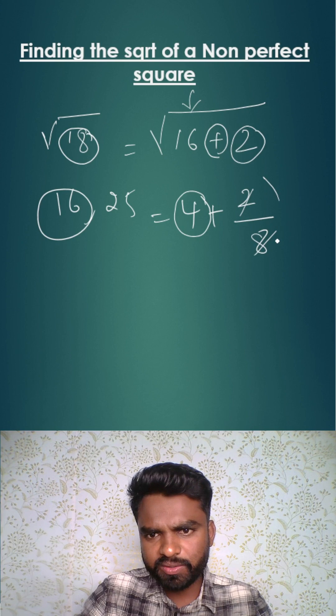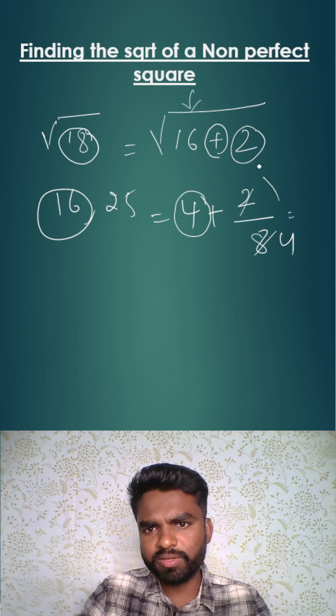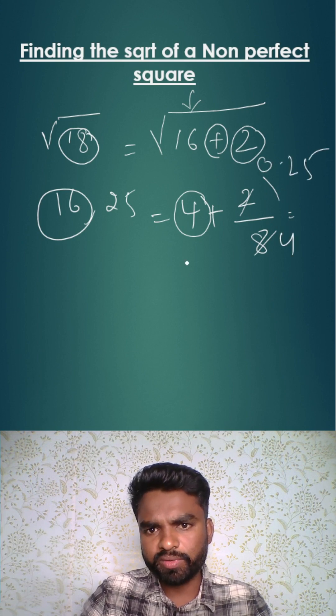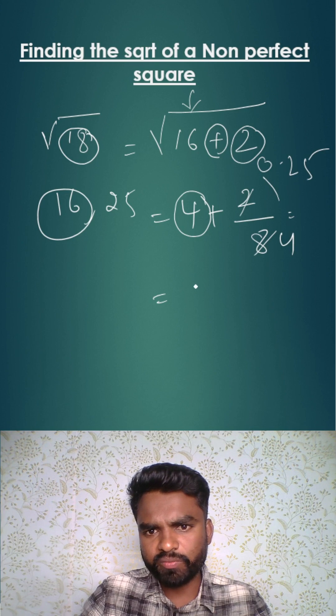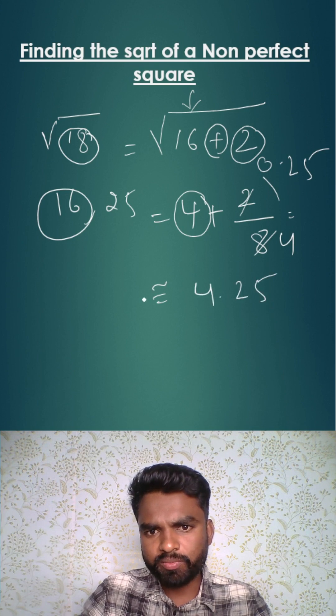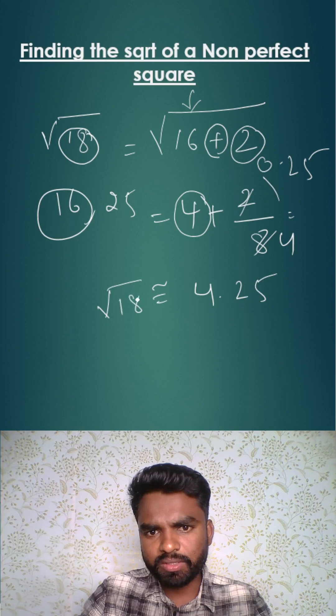So by solving this we get 1 by 4. What is the value of 1 by 4? It's 0.25. So when we add 4 plus 0.25 we'll get 4.25. This 4.25 is approximately equal to the value of square root of 18.